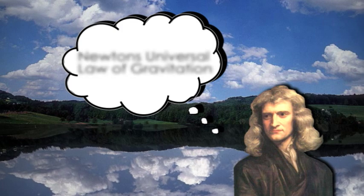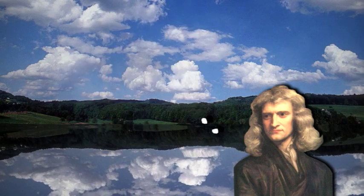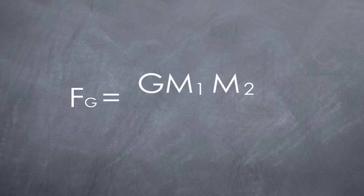Newton's Universal Law of Gravitation states that the force of gravity between two objects is equal to the universal gravitational constant times the mass of each object, all divided by the square of the distance between the two objects.